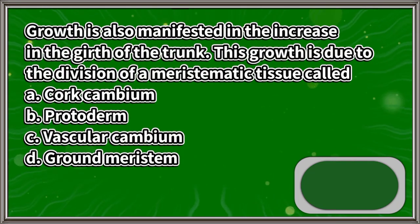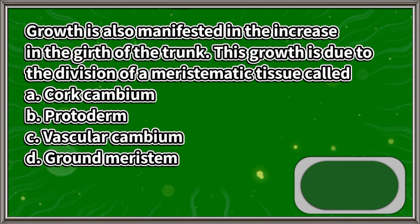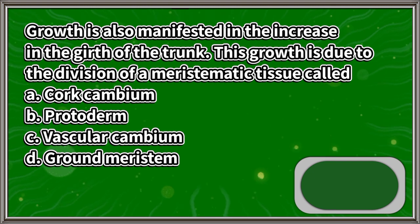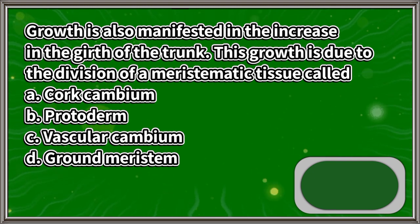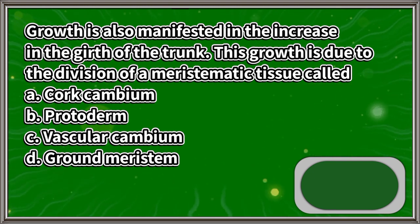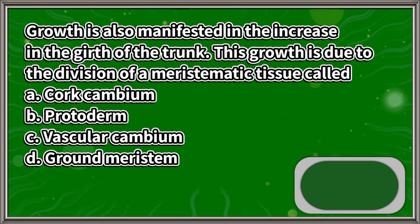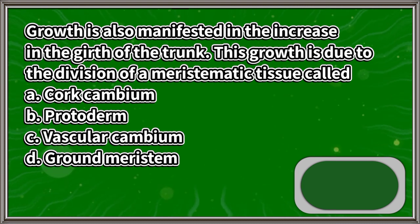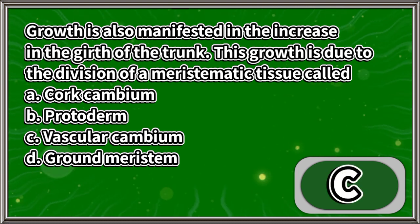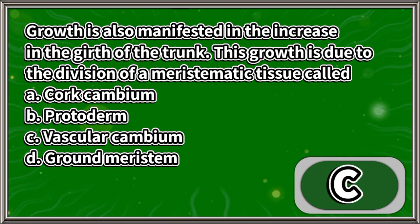Growth is also manifested in the increase in the girth of the trunk. This growth is due to the division of a meristematic tissue called: A. Cork cambium, B. Protoderm, C. Vascular cambium, D. Ground meristem. The answer is letter C.